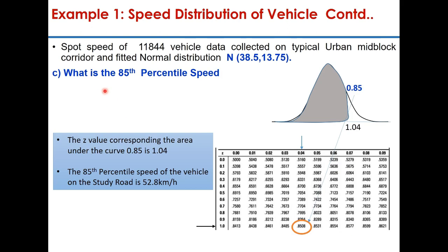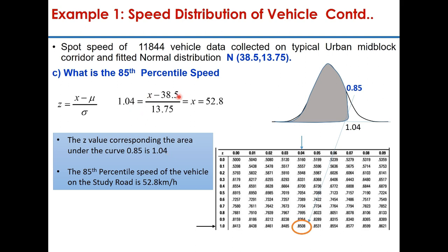The third part of the question: what is the 85th percentile speed of vehicles on the road? Here, you find the Z value from the table such that the area under the curve is 0.85. Corresponding to 0.85, the value of z is 1.04. Substituting into the equation: 1.04 = (x − 38.5) / 13.75, giving x = 52.8 km/h. That is the 85th percentile speed on the highway.